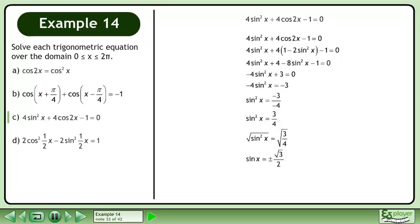This gives us sinx equals positive or negative root 3 over 2. The solution is x equals π over 3, 2π over 3, 4π over 3, and 5π over 3.